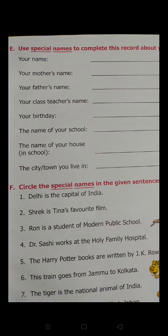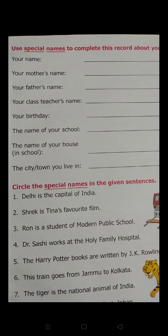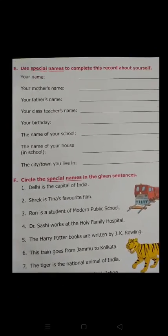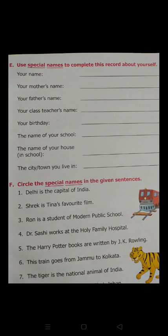Next is the name of your house in school — fill in the house name in the blank. Next is the city or town you live in — fill in the name of your town or city. Whatever you fill in all these blanks, write it in capital letters — remember that. This is all for today and we will solve the next exercise tomorrow. Thank you.